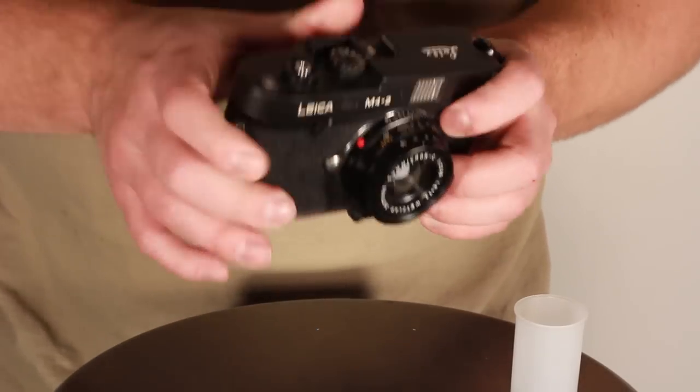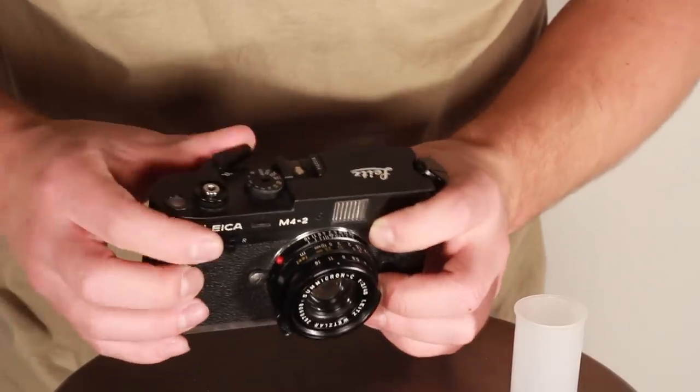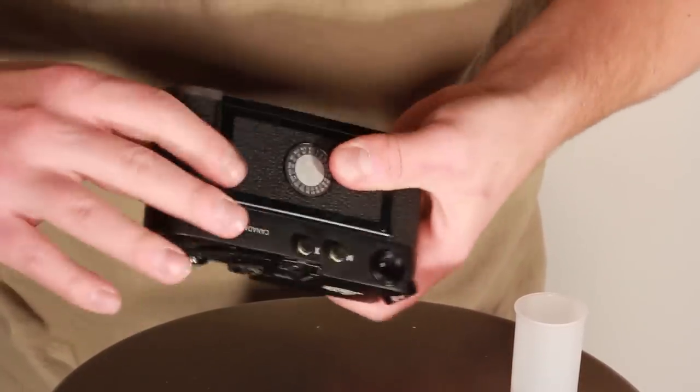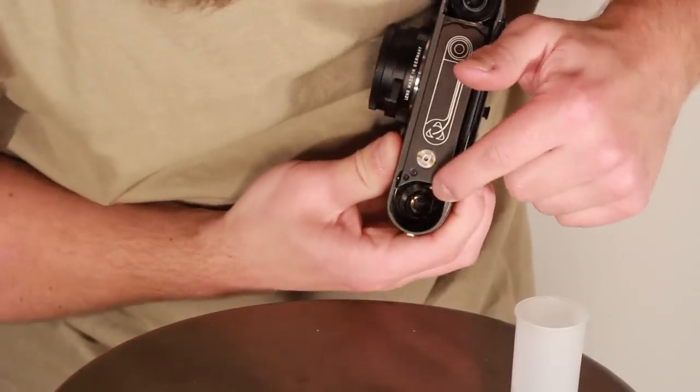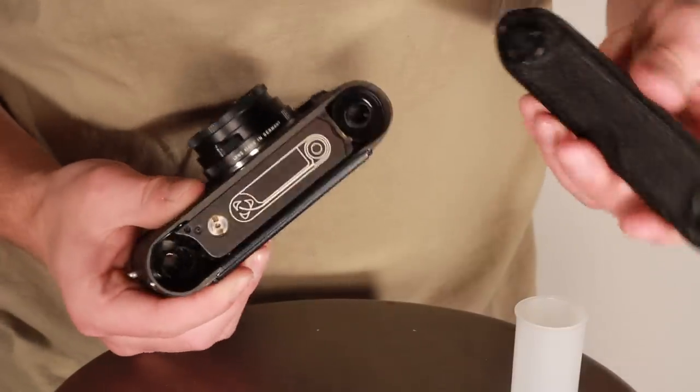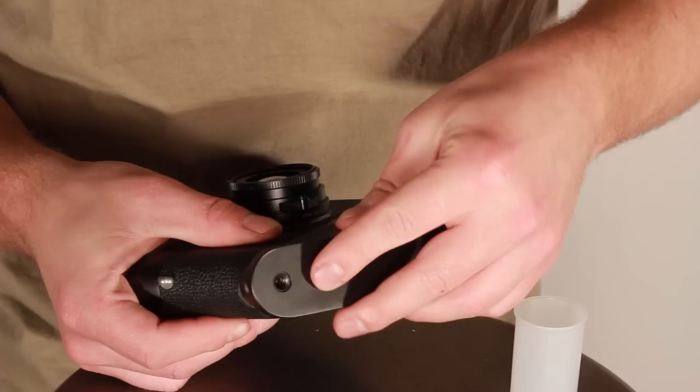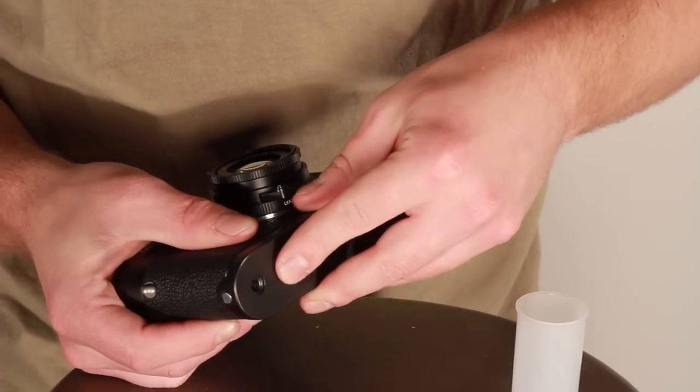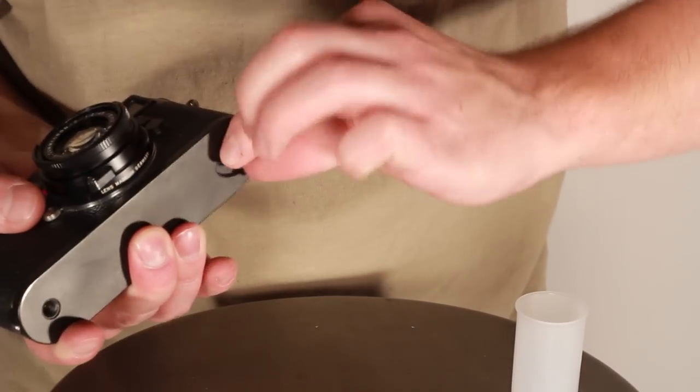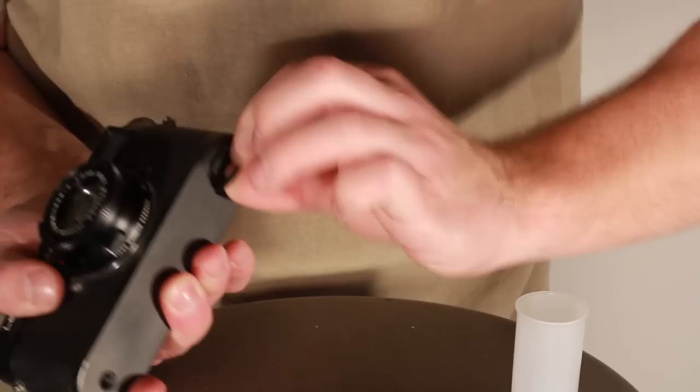I like to just waste a couple frames of film by running it through to make sure that it will actually get taken up here on the take up spool, and we see that it is catching. Next, we do the reverse of taking this off by placing the catch over on the bottom, pushing all the way down and twisting 180 degrees to lock it.